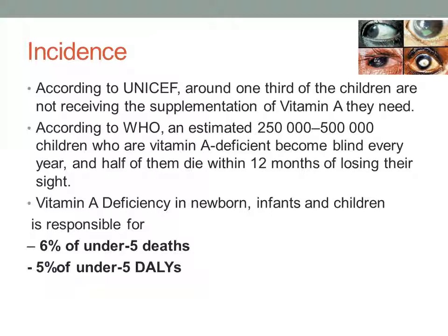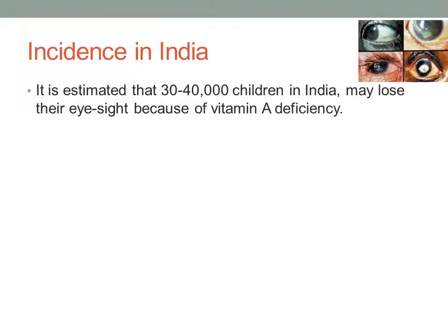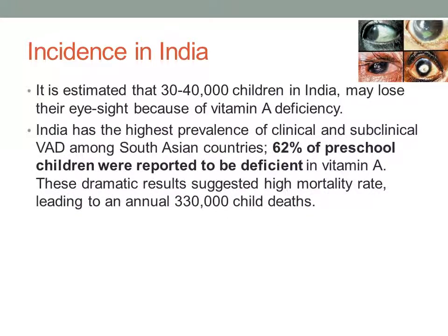One DALY represents the loss of almost one year of full health, and 1.7% of total DALYs are lost due to vitamin A deficiency. In India, it is estimated that 30,000 to 40,000 children may lose their eyesight due to vitamin A deficiency annually. India has the highest prevalence of clinical as well as subclinical vitamin A deficiency among South Asian countries.